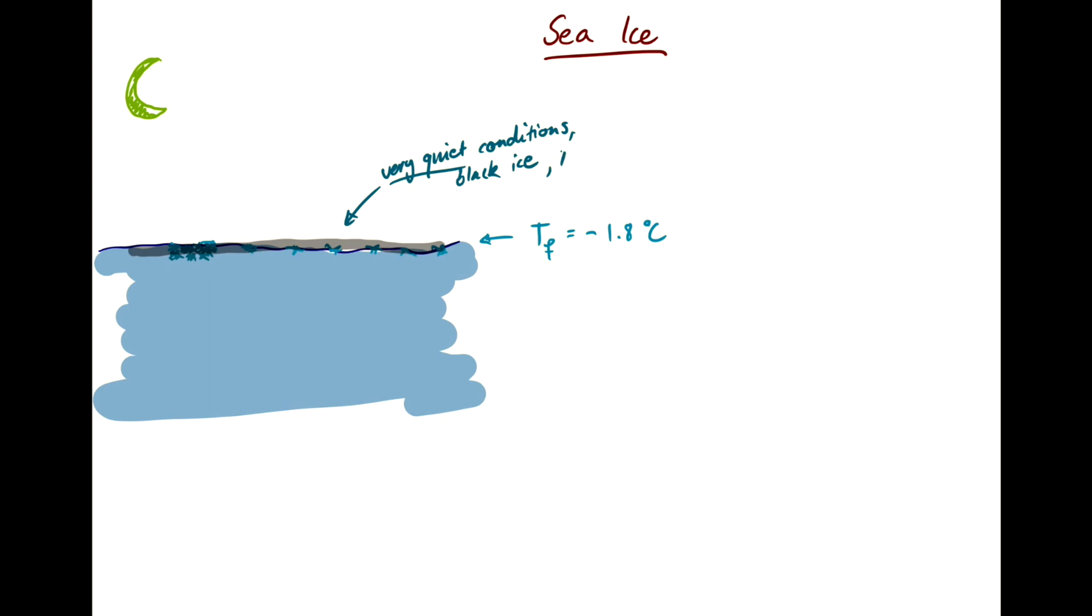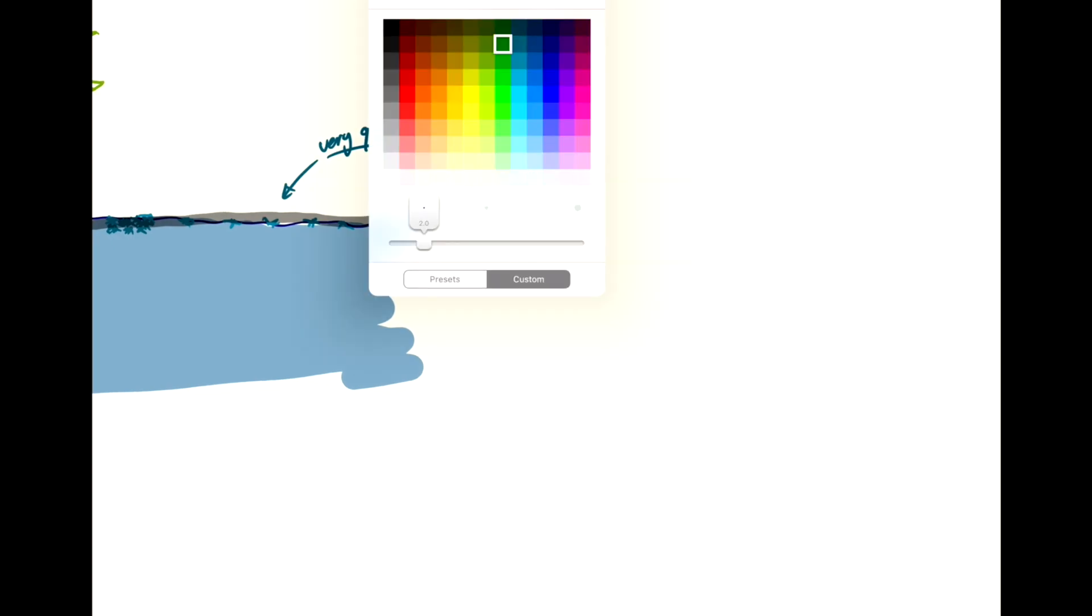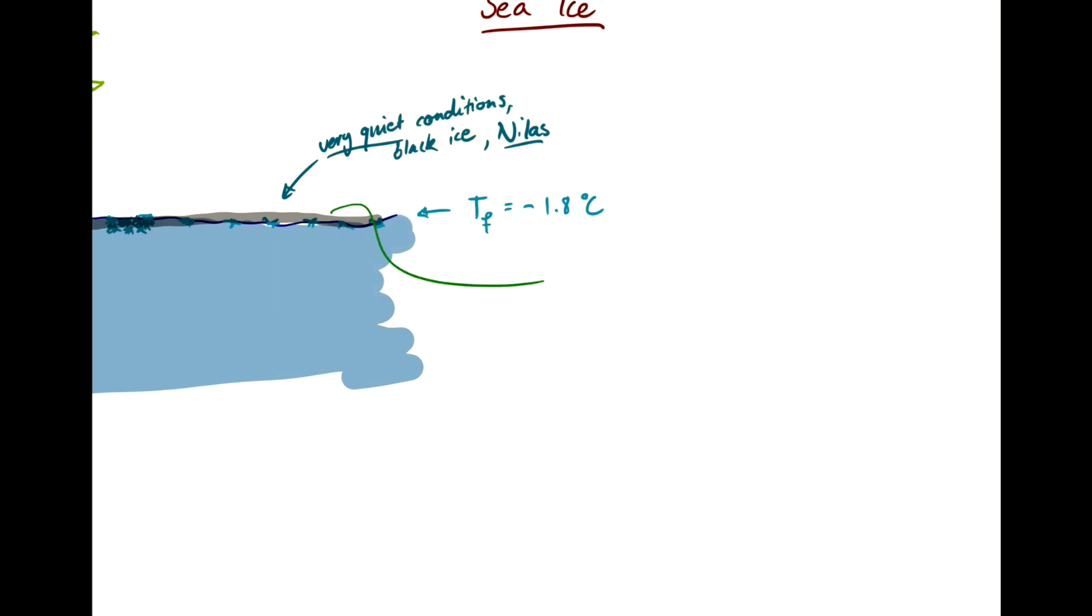And this is this black ice that's also sometimes called Nilas. It can be almost invisible or make the surface of the ocean look kind of glassy or almost greasy. Now, if you add some wind to the surface here, then the ice gets broken up and shuffled around.